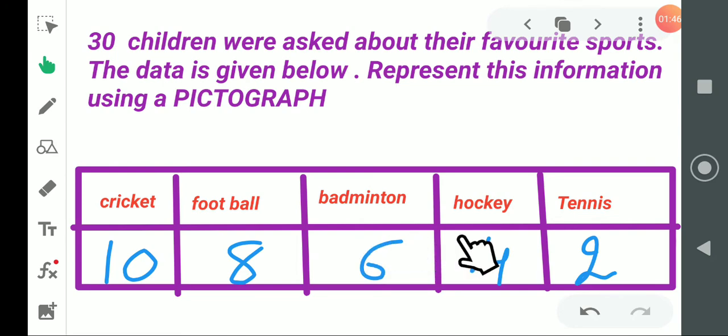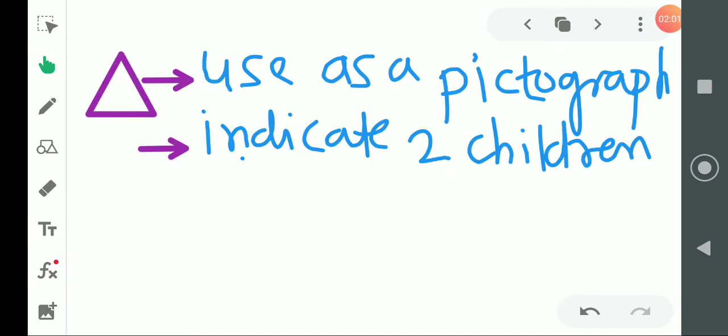Now which sport has how many? Now pay attention children. All these numbers are such that are divisible by two. They come in the table of two. Keep it simple. All of them come in which table? Two's table. So, what did I do? Now see, I took this pictograph sign.